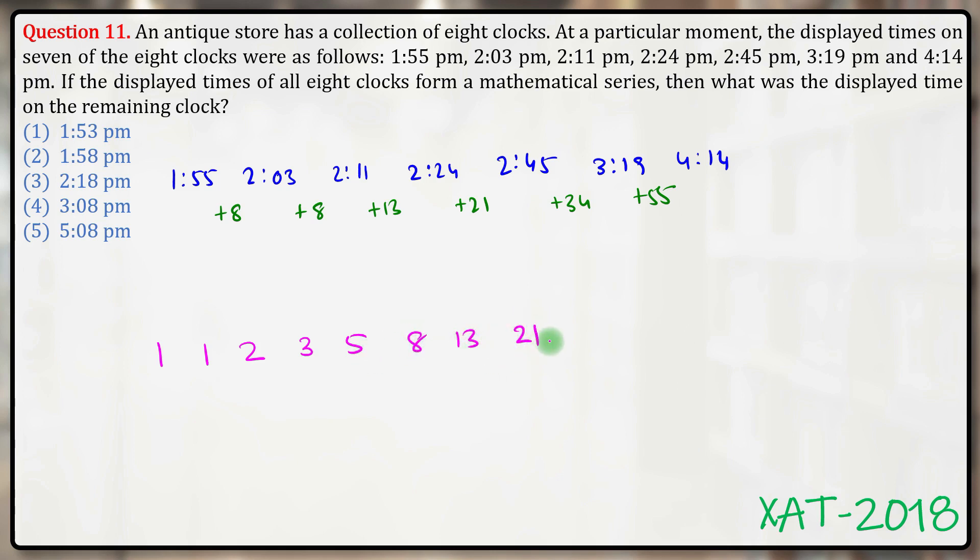So you check: 8, 13, 21, 34, 55 are all parts of the Fibonacci series. Now because this difference is 8, we can consider that the missing clock could have a time of 1:58.